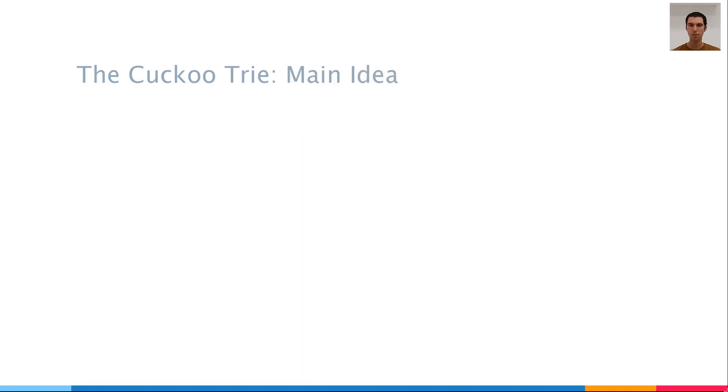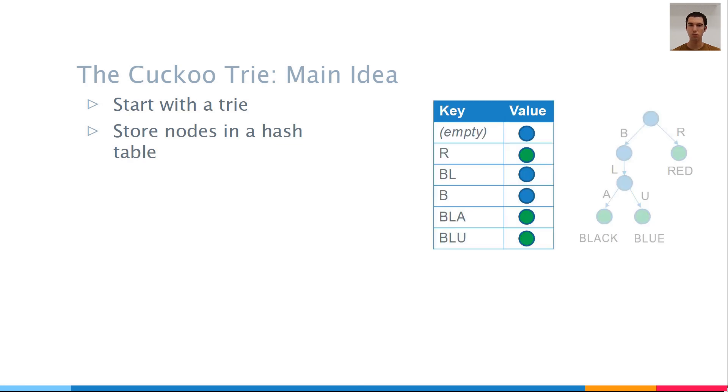Let's see how it works. As the name suggests, the cuckoo trie is built from a trie. We put the keys that we index in a trie, with the values in the leaves. However, instead of putting the trie node's arbitrary memory locations, we store them in a hash table, and specifically a cuckoo hash table. The hash table maps a key to a value. So the values are the trie nodes, and the key of each node is its name, which is the prefix that it represents.